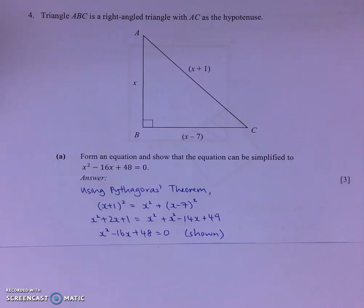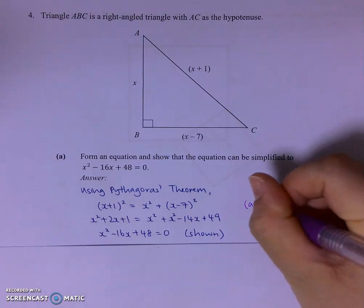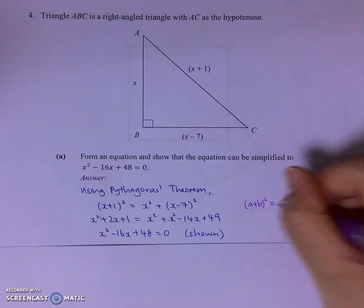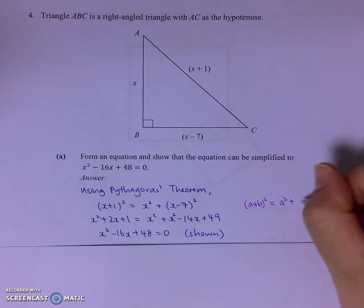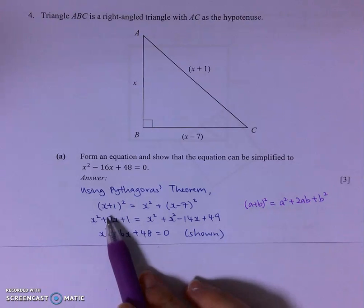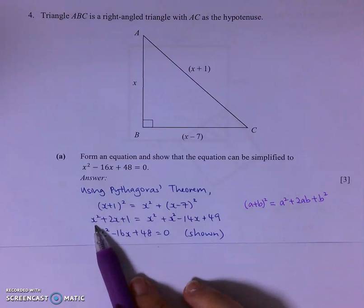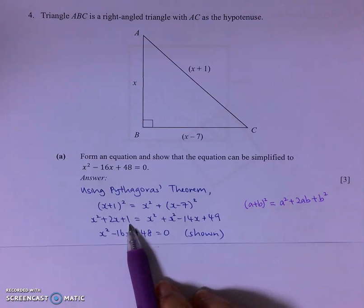Now you have to recall how you do your expansion. So when I have A plus B squared, it's actually A squared plus 2AB plus B squared. So this will help you to expand X plus 1 squared, A squared plus 2AB plus B squared.